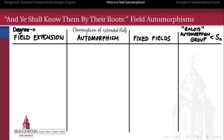Automorphism groups often also go by the name of the Galois group of a field extension, named for Évariste Galois, who famously laid the foundation for all of these ideas in the 19th century. One of the greatest observations is that every automorphism group for a degree n field extension must be isomorphic to a subgroup of the symmetric group on n symbols.